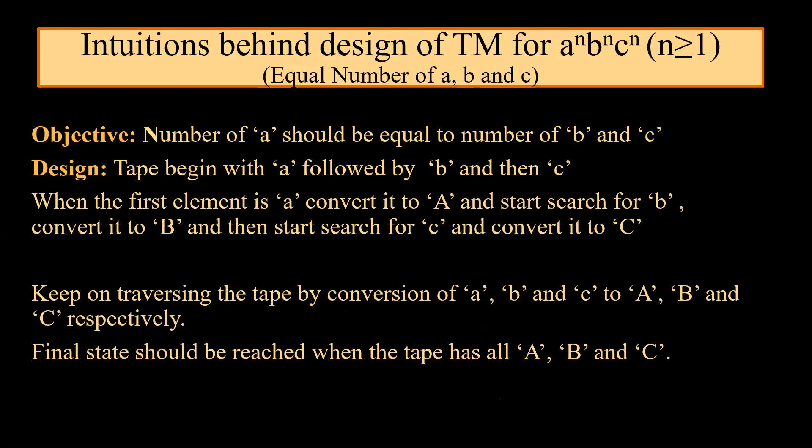When the first element is A, convert it into capital A and start searching for B. When you find B, convert it into capital B and then start searching for C and convert it into capital C. Keep on traversing the tape by converting small A, small B, and small C to capital A, capital B, and capital C respectively. The final state should be reached when the tape has all capital A, B, and C.